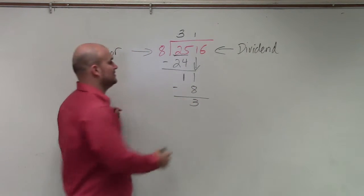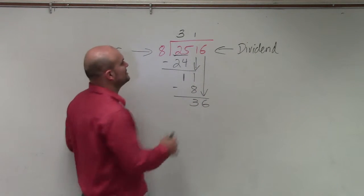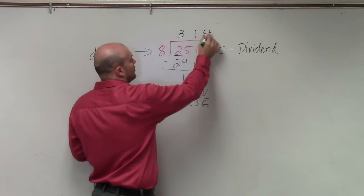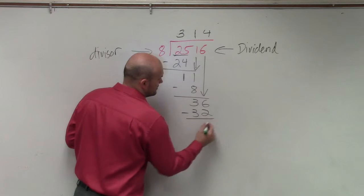8 does not divide into 3. So I bring in the next value, which would be 6. 8 divides into 36 four times. 4 times 8 is 32. Subtract, and you get 4.